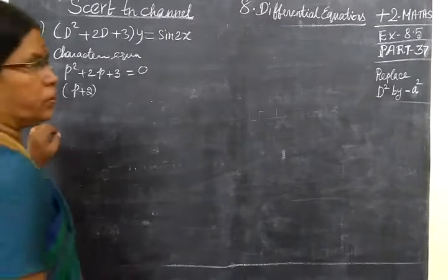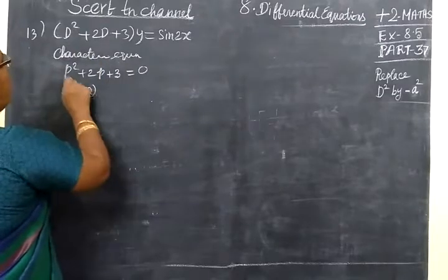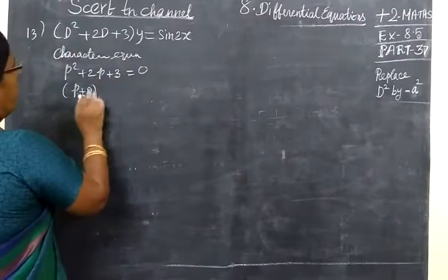Now today we see part 37. We write the characteristic equation: P² + 2P + 3 = 0.